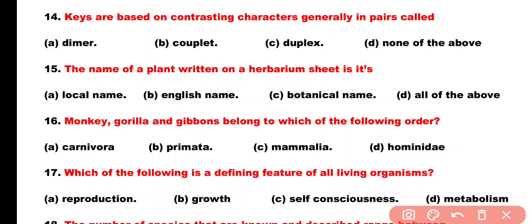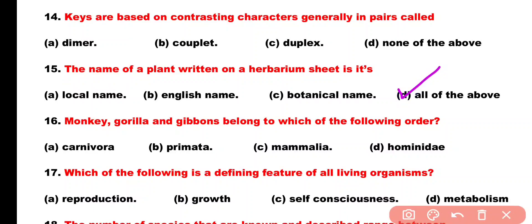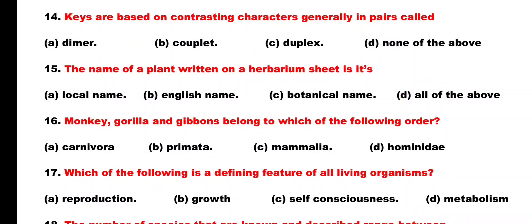Question number 15. The name of a plant written on a herbarium sheet is its: Option A: Local name, Option B: English name, Option C: Botanical name, Option D: All of the above. The name of a plant written on a herbarium sheet includes its local name, English name, and botanical name — all of the above.